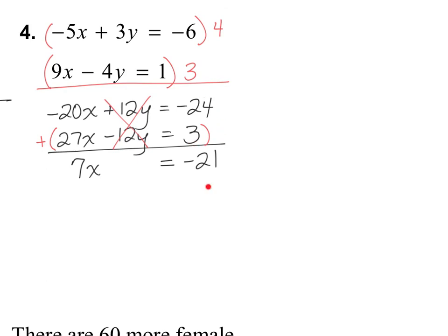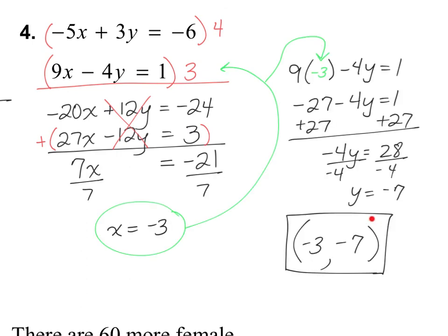Finish this on your own: solve for x, plug it back into one of the original equations, and write your answer as an ordered pair. My answer was negative 3, comma negative 7. If you didn't get that, check your work and find your mistakes. That's it for today — thanks for watching.